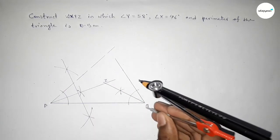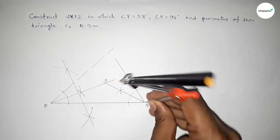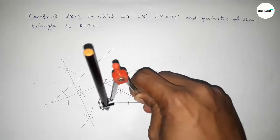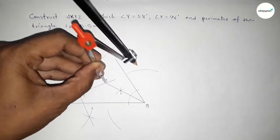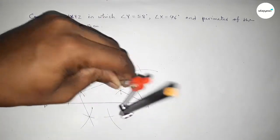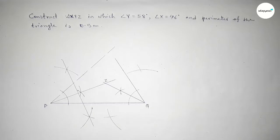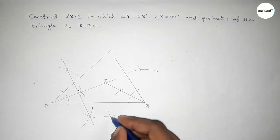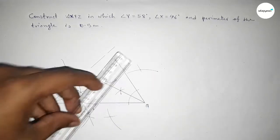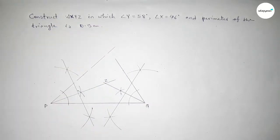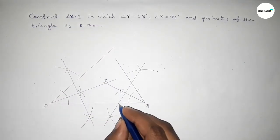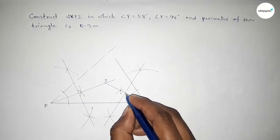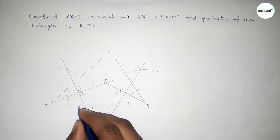Now we have to bisect the line ZQ. Taking greater than half of ZQ and drawing an arc. With the same length, putting the compass at Q and cutting here. Both curves intersect at two points. Joining this bisector line.